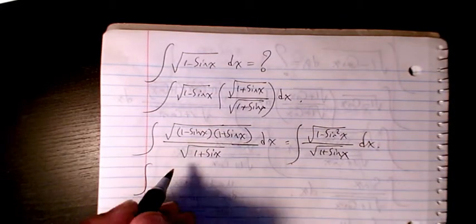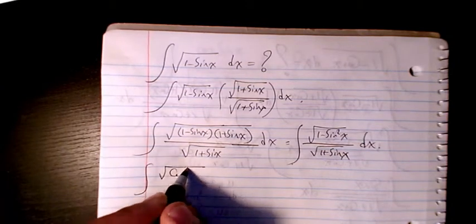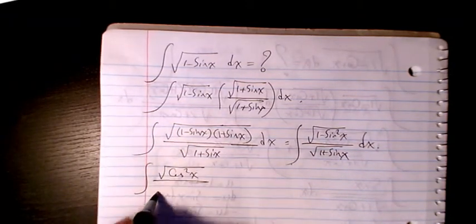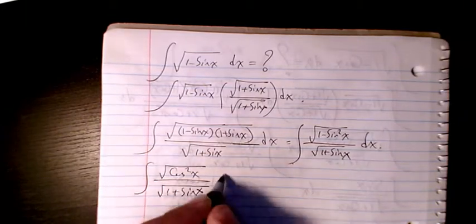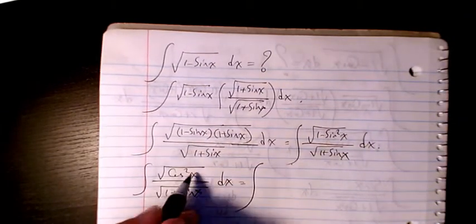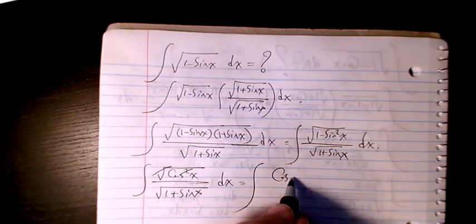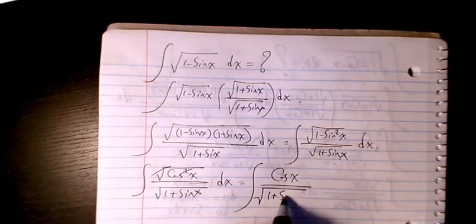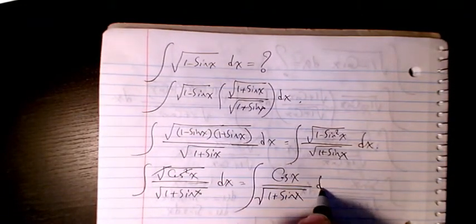Square root of (1 minus sine squared x) is the same as square root of cosine squared x, divided by square root of (1 plus sine x) dx. These two cancel out, giving us cosine x divided by square root of (1 plus sine x) dx.